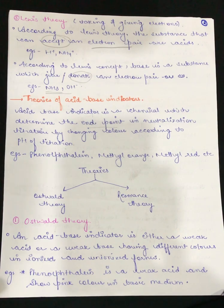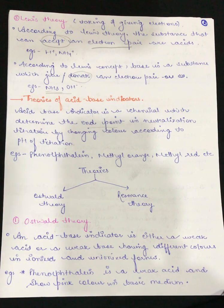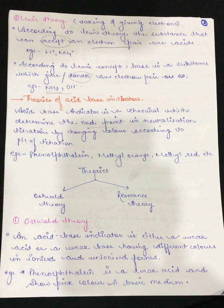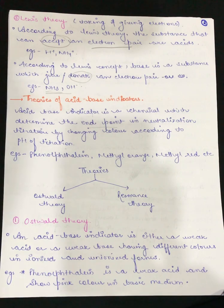Now let's see what are the two theories of acid-base indicators. From an exam point of view, this is a very important topic. We have the Oswald theory and the resonance theory. The Oswald theory states that an acid-base indicator is either a weak acid or a weak base having different colors in ionized and unionized form.